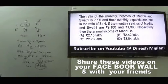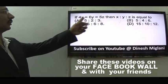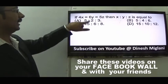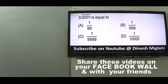Question 28: Given 4x = 6y = 5z. Taking LCM of 4, 6, 5 = 60: x = 15, y = 10, z = 12. Ratio x:y:z = 15:10:12. Answer is D.